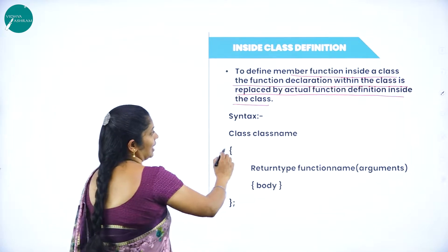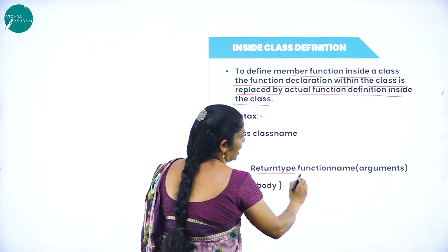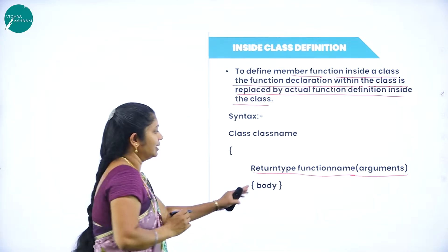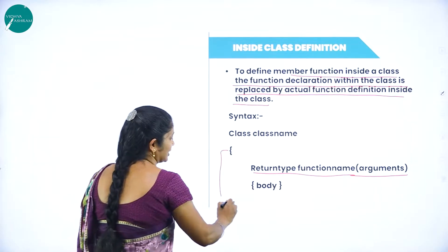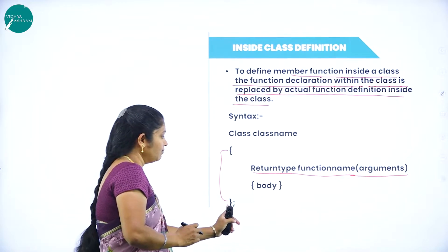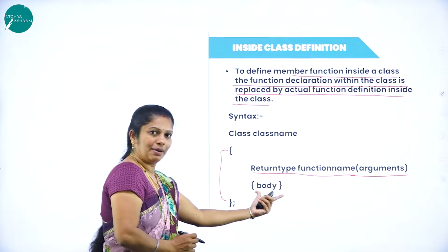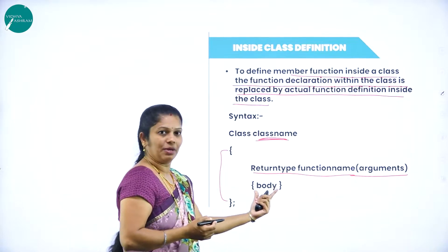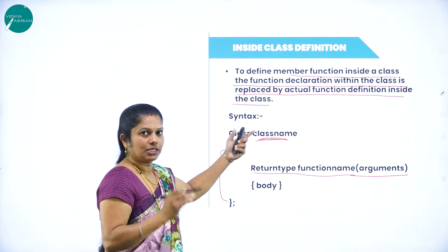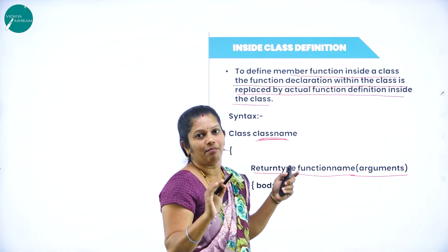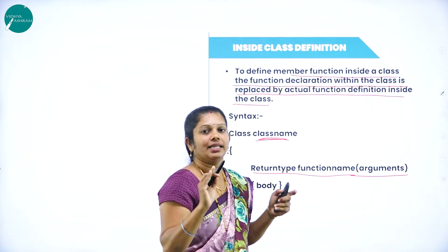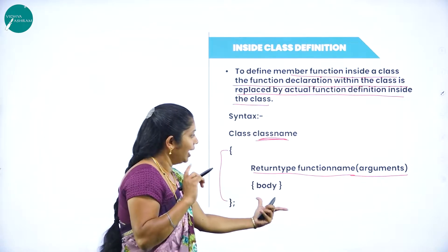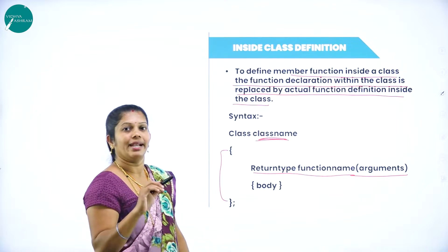While writing the syntax: class, then class name, then we have the return type, then function name, then we have the argument, then inside that we will write the body, then later on we will close the class. To close the class, after the flower bracket you have to put a semicolon. All the statements are written inside the class itself. This question in the annual exam you will get for five marks — explain inside class definition. That statement carries one mark, this syntax carries two marks, and the example carries two marks.